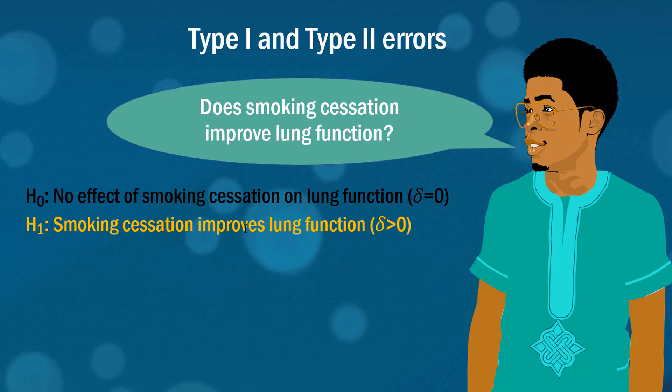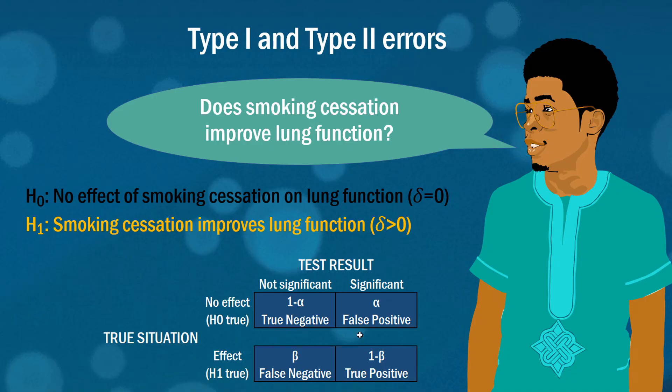Our alternate hypothesis which is the thing we are seeking evidence for is that it improves lung function. So again it's that common conservatism where we put the no effect in the null hypothesis to see whether we have enough evidence to reject it. Then we can set up our 2x2 table again if we like with the true situation over here which is the reality of the effect of smoking cessation on lung function. And then our test result, what we actually find from this test we're about to do.